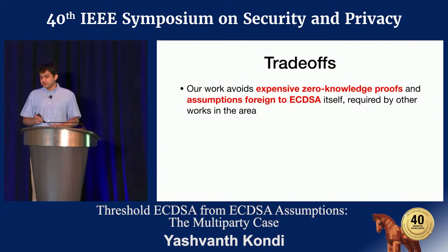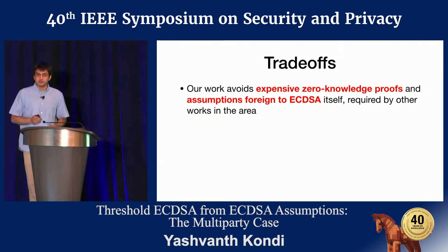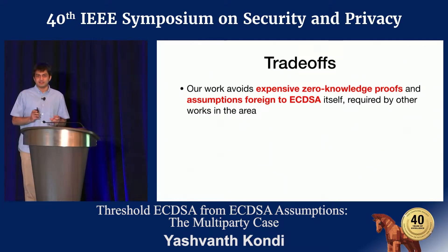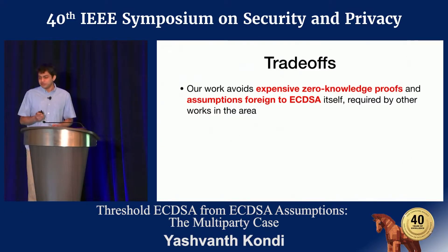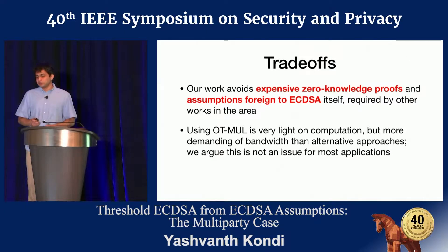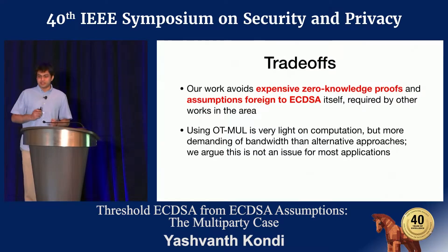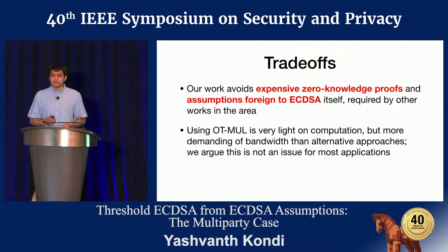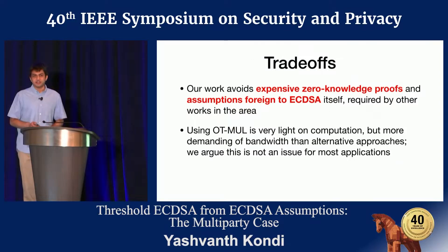The trade-offs of this approach: we avoid expensive zero-knowledge proofs, which makes UC security easier to achieve, and we avoid assumptions foreign to ECDSA itself — all of our assumptions are native to the same curve. Using OT-based multiplication is light on computation but more demanding in terms of bandwidth — specifically more so than homomorphic encryption. But we show a couple of use cases to argue that this is not really an issue in practice.